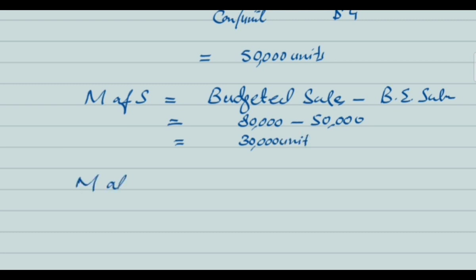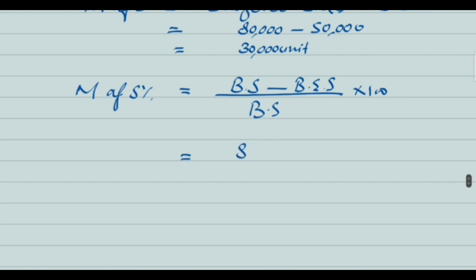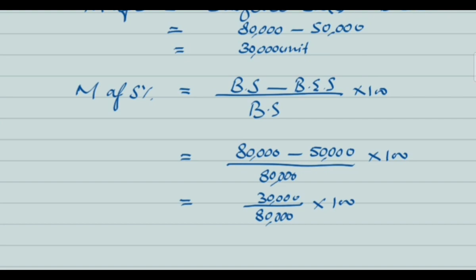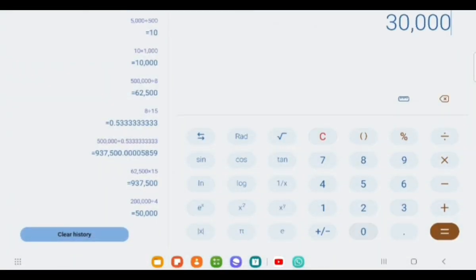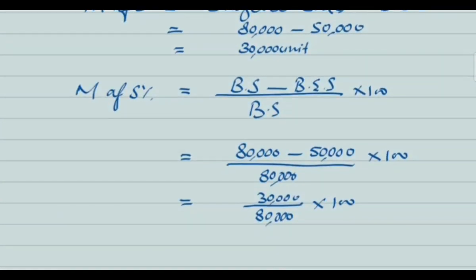To calculate the margin of safety as a percentage, the formula is: budgeted sales minus break-even sales, divided by budgeted sales, multiplied by 100. So that is 80,000 minus 50,000, divided by 80,000, multiplied by 100 — which equals 30,000 divided by 80,000 multiplied by 100, giving 37.5%.